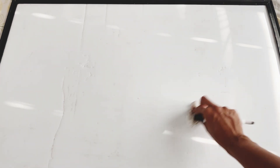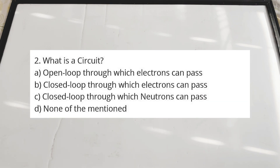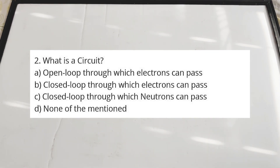The second question is regarding some terminologies we use in digital electronics. The question is: what is a circuit? Option A: an open loop through which electrons can pass. Option B: a closed loop through which electrons can pass. Option C: a closed loop through which neutrons pass. Option D: none of the mentioned.